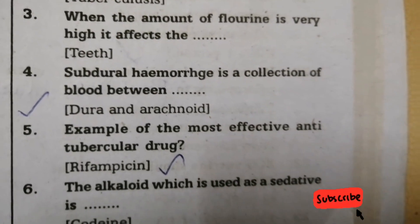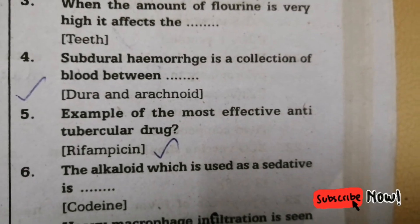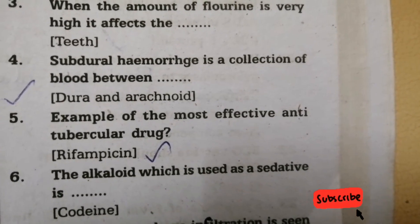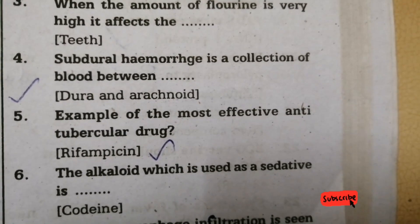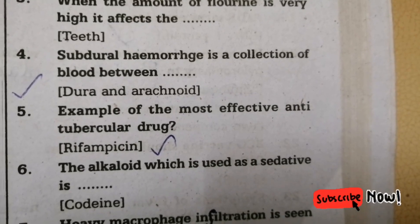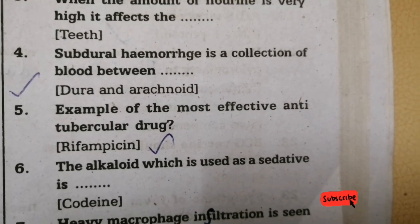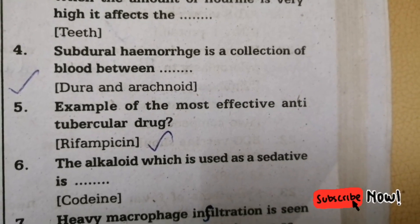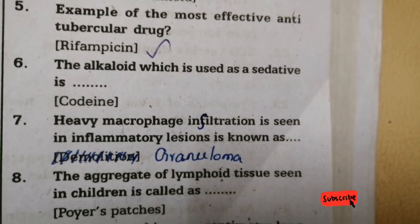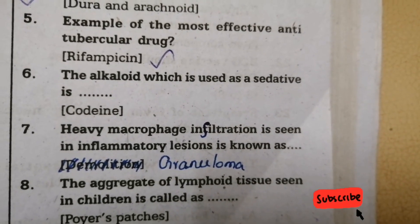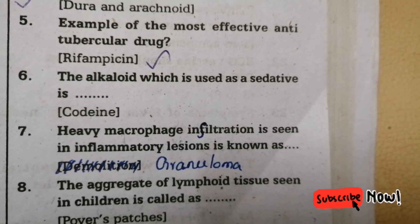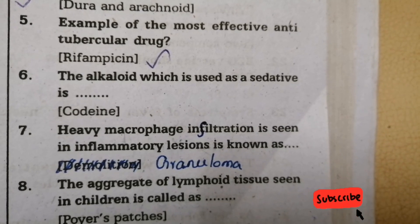Fourth one: Subdural Hemorrhage is a collection of blood between which layers? Answer: between the dura mater and arachnoid mater. Fifth one: example of the most effective anti-tubercular drug is Rifampicine. Sixth one: the alkaloid which is used as a sedative — answer is codeine.